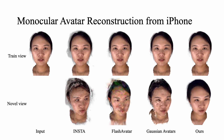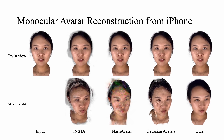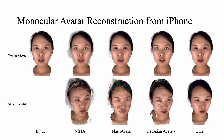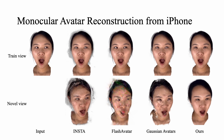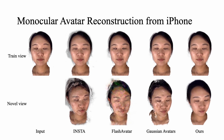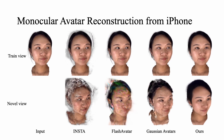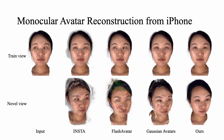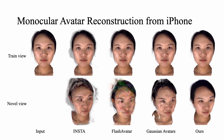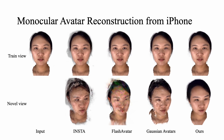We also conduct comparisons on monocular videos captured with smartphones. For front-facing sequences with limited head poses, all methods fit the observed frames accurately. However, without effective priors to constrain less-observed regions, baseline methods fail to extrapolate well to novel views.